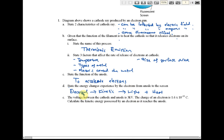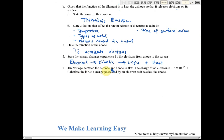You must include all three stages from anode to screen: electrical to kinetic, and kinetic to light and heat. Part E: the voltage between the cathode and anode is 3 kilovolts. The charge of the electron is 1.6 × 10⁻¹⁹ coulombs. Calculate the kinetic energy possessed by an electron as it reaches the anode.